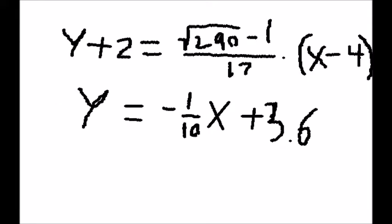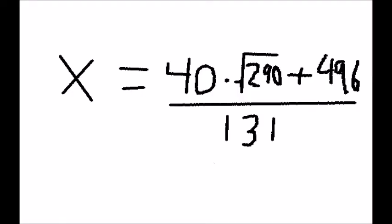We can find the intersection between these lines using a system of equations to find D. Substituting in y provides us with the x coordinate: (40√290 + 496)/131.